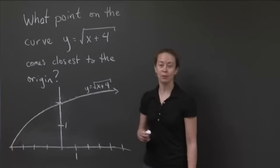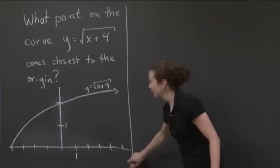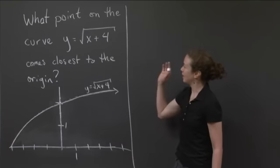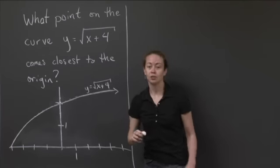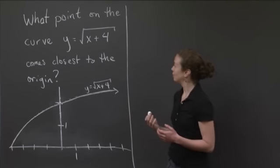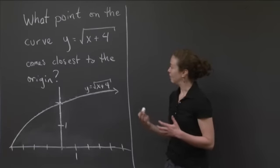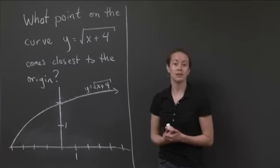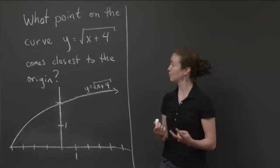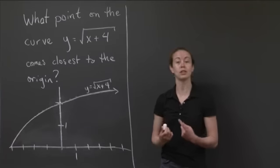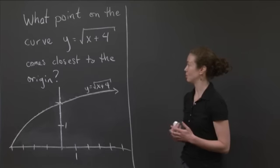Welcome back. Hopefully you were able to get pretty far into this problem. So again, the question is that we want to optimize, in this case minimize, distance to the origin from this curve. What we're really trying to do is we have a constraint. The constraint is we have to be on the curve. And then we also have something we're trying to minimize, which is distance. We have to make sure that we understand the two equations that we need: the constraint equation and the optimizing equation. To optimize, we need to know how to measure distance in two-dimensional space.